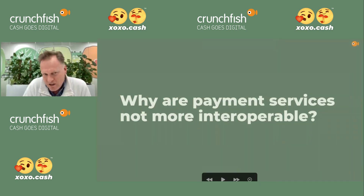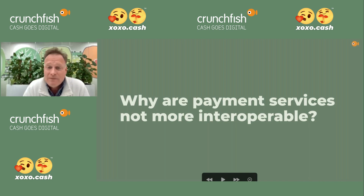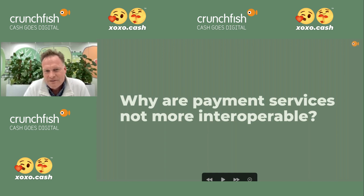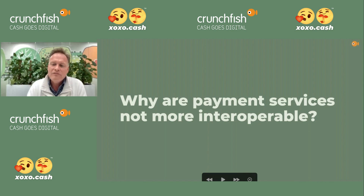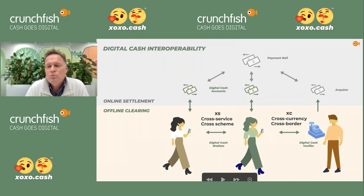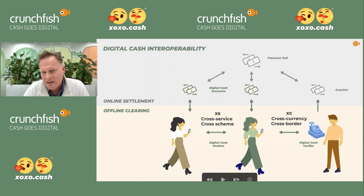The third and last question: why have we built systems where interoperability is so hard? Payment services today are not very interoperable because they're all built as online systems. At the critical moment of payment it is very hard to make things interoperable — things need to work instantaneously. But if you develop a system with this two-tier architecture — offline clearing and online settlement — it is really possible to connect services with each other, domestically and internationally.